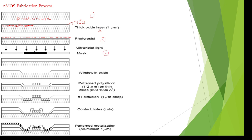In the fourth step, to get a hard surface, we pass UV light through a mask where diffusion is required. Using the mask, we pass UV light only in the required remaining areas. This is the fourth step — passing UV light using a mask to harden the surface.